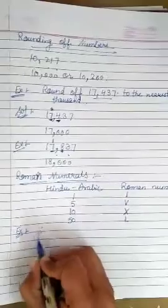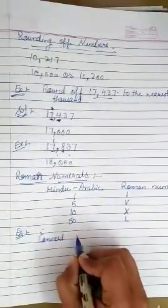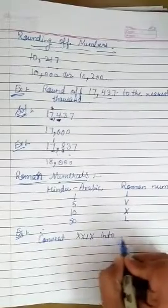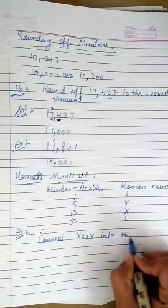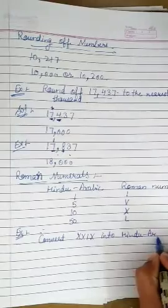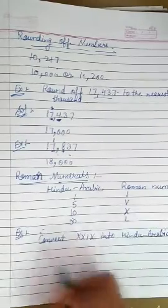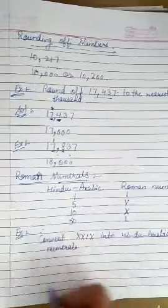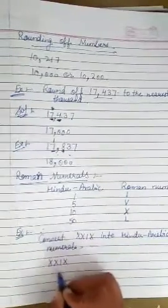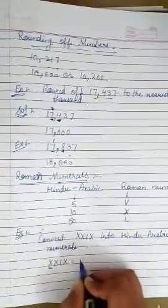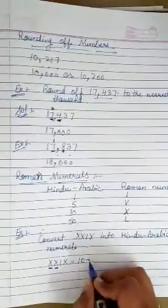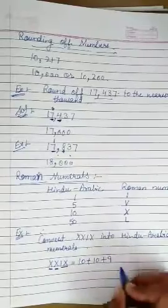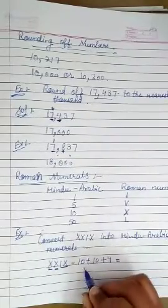So, convert this number into Hindu Arabic numbers. So, this X means 10, this X means 10 and this is the symbol for 9. The answer that we got, get is 29.